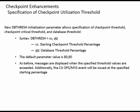We also have a new DBthresh initialization parameter, which allows specification of Checkpoint Threshold, Checkpoint Critical Threshold, and Database Threshold. The syntax is DBthresh equals CC, DD — where CC is the starting checkpoint threshold percentage and DD is the database threshold percentage. The default parameter values are 80% and 80%. Messages are displayed when the specified threshold values are exceeded, and a CA Ops MVS event will be issued at the specified starting percentage.